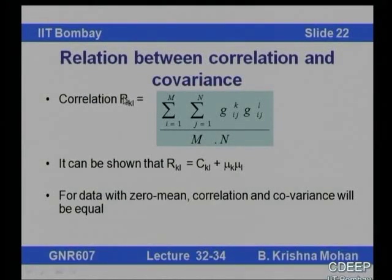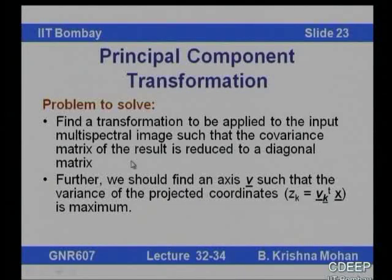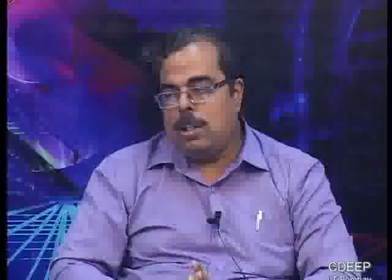We can also get the inter-band correlation and relate it with covariance. Correlation is covariance plus the product of the mean vectors. If the data is zero-mean, covariance and correlation are the same. Now let us pose the problem: given multidimensional data with redundancy or inter-band correlation, we want to determine if they can be projected onto a different set of axes for the purpose of reducing data volume.